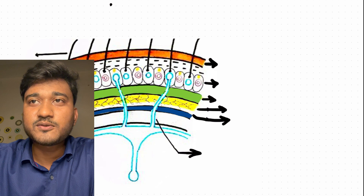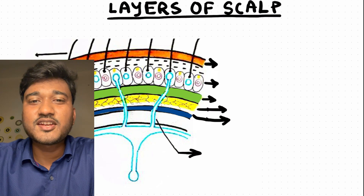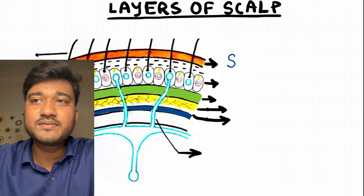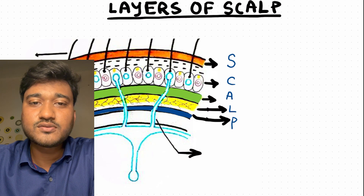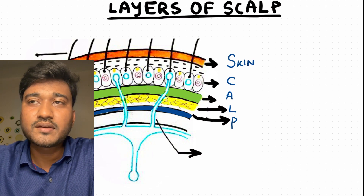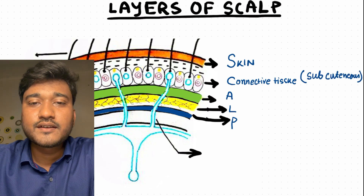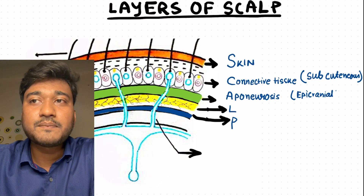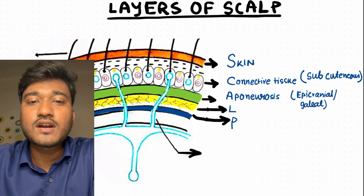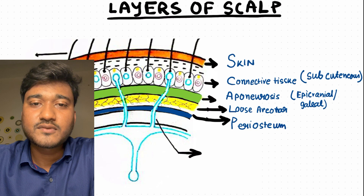Let's talk about the layers of the scalp. Remembering this is very easy because the mnemonic is SCALP as well. From superficial to deep: S is for Skin, C is for subcutaneous Connective tissue beneath the skin, A is for Aponeurosis — called the galeal aponeurosis or epicranial aponeurosis — and deeper to that we have Loose areolar tissue, and deeper still we have Periosteum of the skull bone.